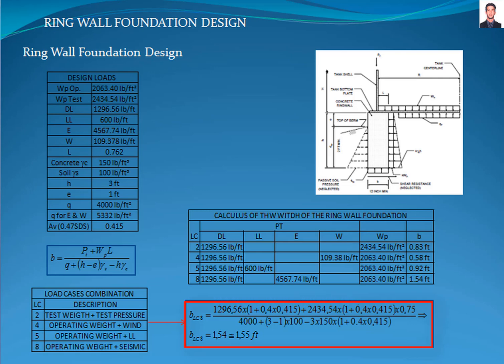For example, for load combination 8, the result is 1.54 feet. The rest of the results are summarized in this table for each load combination.